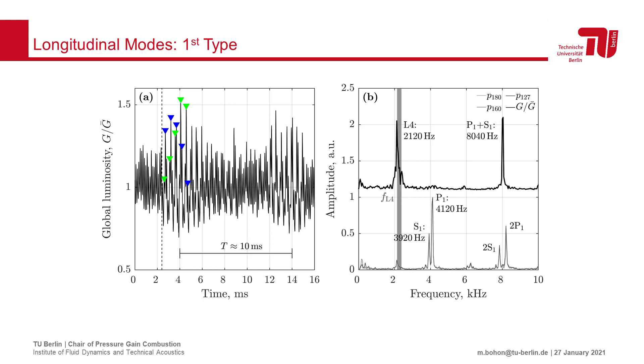We can compare the pressure traces measured in the wall of the combustor with the global luminosity. From the Fourier spectrum of the pressure traces, we can identify the frequencies of the two rotating waves at about 4100 and 3900 Hz. These waves will intersect at the sum of their frequencies, and indeed we can observe a peak in luminosity spectrum at around 8000 Hz.